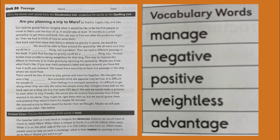Human bodies have problems being weightless for that long. One way to improve the effect on humans is to make gravity by spinning the spaceship. You know what that's like. If you ever held someone's hand and spun around, you have felt how it pulls you outward. We hope there would be at least one passage in the ship where we could float.